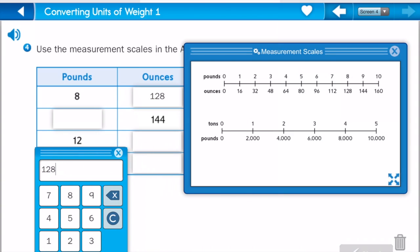My next one, they gave me the ounces, but they want me to find out what the pounds are. So if I look, I'm looking for 144 at the bottom. Oh, and look, I find it. 144 ounces equals nine pounds.